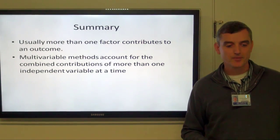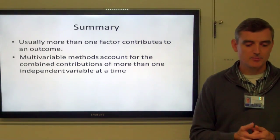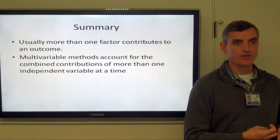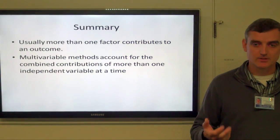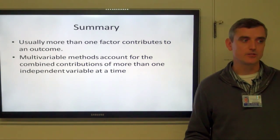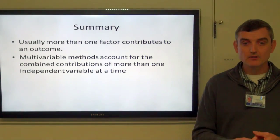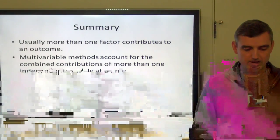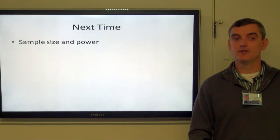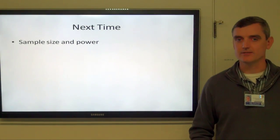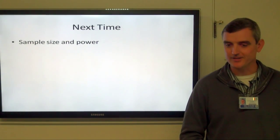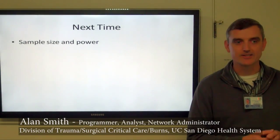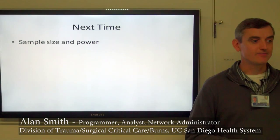To sum up, usually there is more than one factor that contributes to an outcome, so multivariable methods are important to use. We're generally going to use either linear regression or logistic regression for that. Next time, we're going to talk about sample size and power — for clinical trials, how many people we're going to need in order to find a significant outcome.